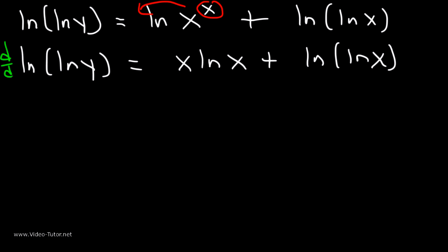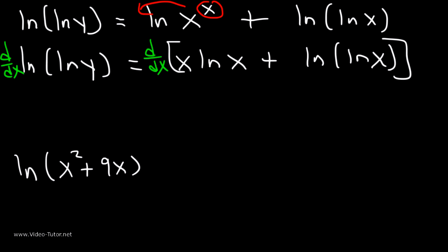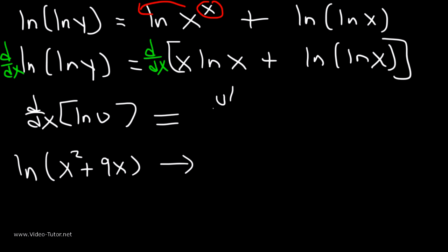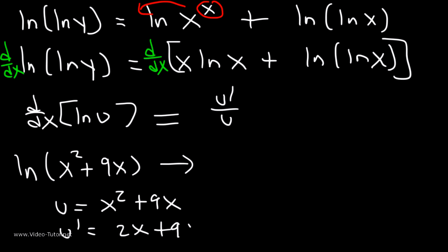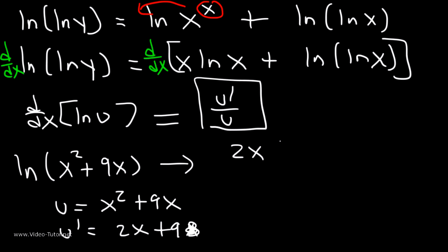I'm going to add a d/dx on both sides to indicate that we're about to differentiate both sides with respect to x. To review how to differentiate a natural log function: let's say we want to find the derivative of ln(x² + 9x). The derivative of ln(u) is equal to u′ divided by u. So u is x² + 9x, and u′ is 2x + 9. Therefore, the derivative of ln(x² + 9x) is (2x + 9) divided by (x² + 9x).